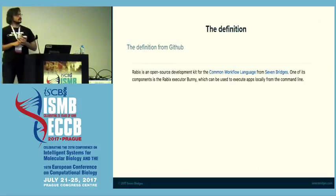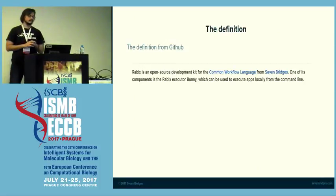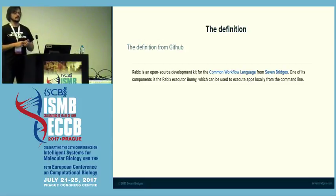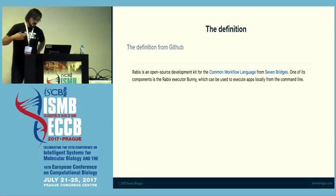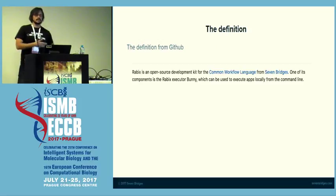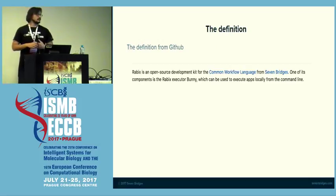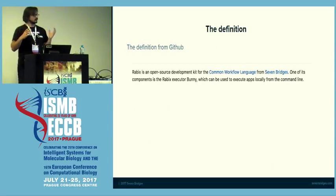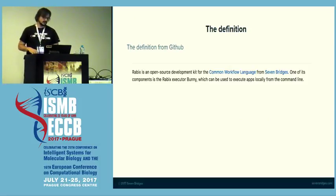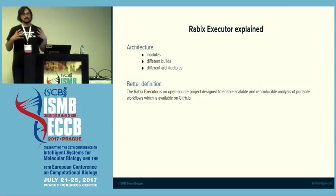So the definition — if you go to our GitHub page, you will see that it says Rebix is an open source development kit for the Common Workflow Language from Seven Bridges. One of its components is the Rebix executor or Bonnie, which can be used to execute applications locally from the command line. But that's actually not the full definition — that just describes what kind of build we have officially released so far. So actually we released just the local Bonnie.